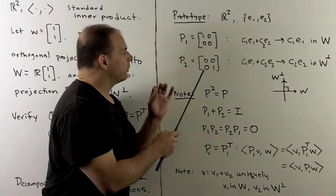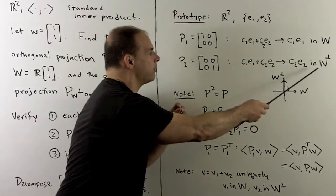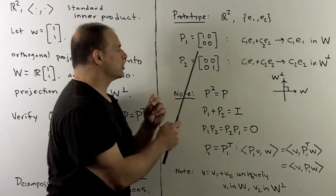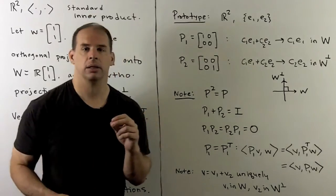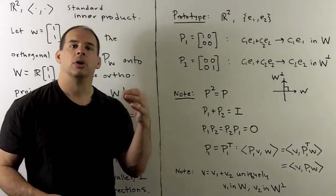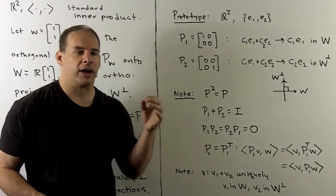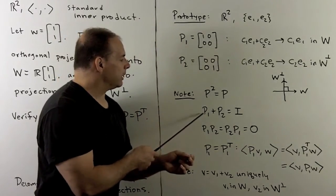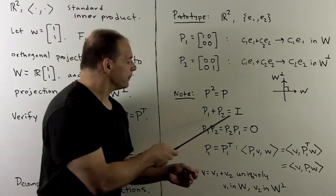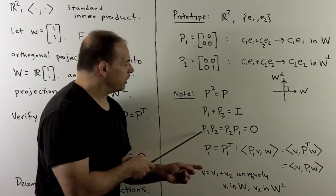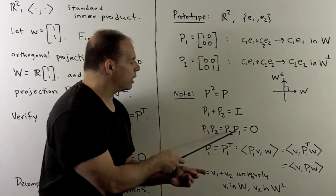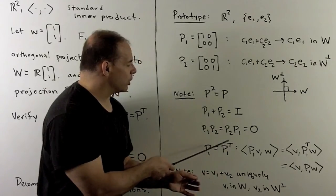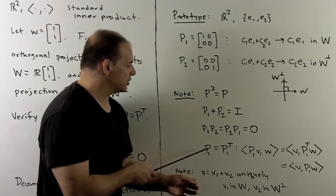On the other hand, if we project onto the orthogonal complement, we keep the part with E2, giving the matrix 0, 0, 0, 1. You can verify the following identities for P1 and P2: P² = P; P1 + P2 equals the identity; the product in either order P1·P2 = P2·P1 = 0; and finally P1 = P1 transpose, and the same for P2.